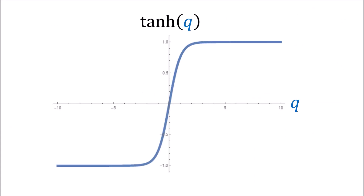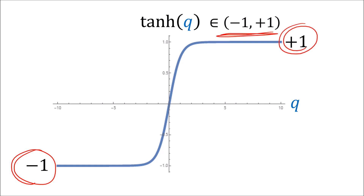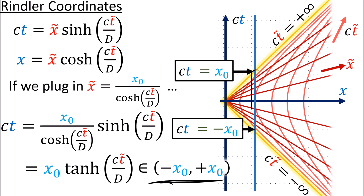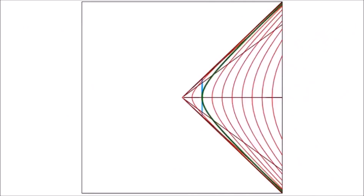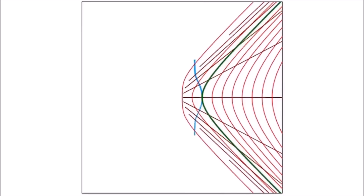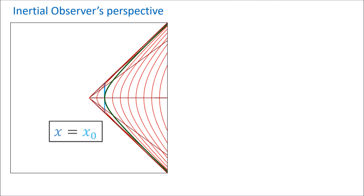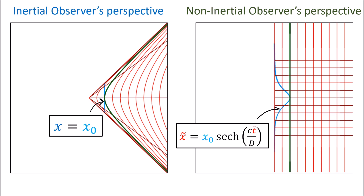It's important to notice that the output of the tanh function is always between negative 1 and positive 1. So the output of x0 times tanh is always between negative x0 and positive x0. This means that for Rindler coordinates, this vertical world line is only defined between ct equals negative x0 and ct equals positive x0. This makes sense because the Rindler observer does not have access to any spacetime events beyond these two world lines, which are sort of like horizons. So this world line that appears vertical in inertial coordinates actually looks like a hyperbolic secant when viewed from Rindler coordinates.